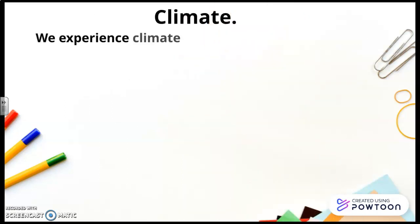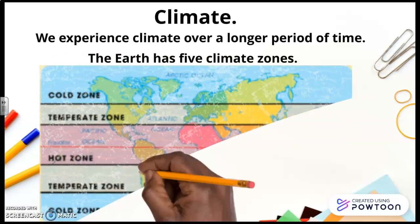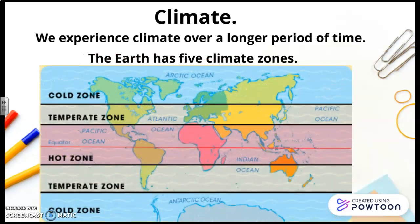Climate. We experience climate over a longer period of time. The Earth has five climate zones. Here you are them. We've got the cold zones near the poles, the temperate zone, and the hot zone near the equator.